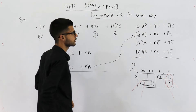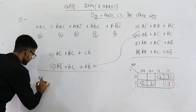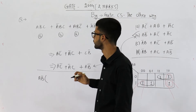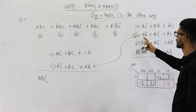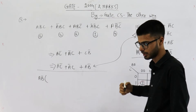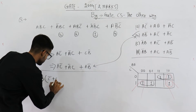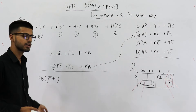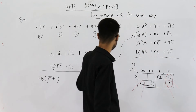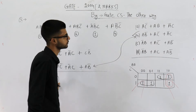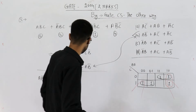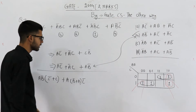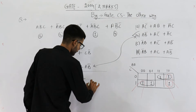Let's expand option B to verify. It is A B-bar. To represent each term in three variables and get canonical SOP form, we're missing C in this term. So we multiply A B-bar by (C-bar + C), and since C-bar + C equals 1, we can multiply anything by it. For A C-bar, B is missing, so we multiply by (B-bar + B). In the third term, B is also missing, so we multiply by (B-bar + B) as well.